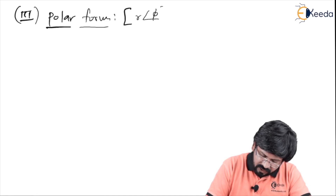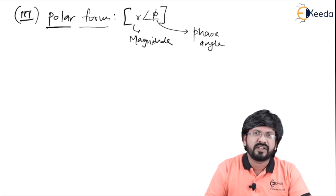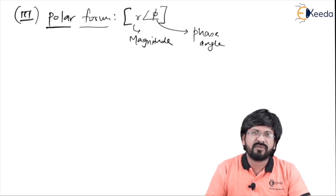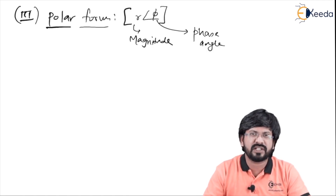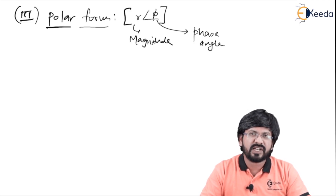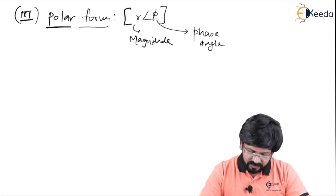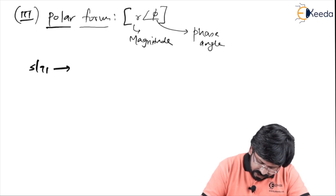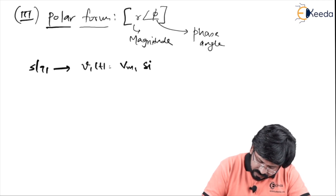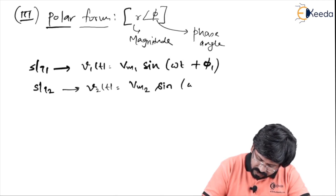Polar form is written as r∠φ, where r indicates magnitude and φ indicates the phase angle. The reason we need polar form is for multiplication and division of signals. For addition and subtraction of signals, other forms may work, but for multiplication and division, sinusoidal form is not appropriate. We go for polar form for those calculations.